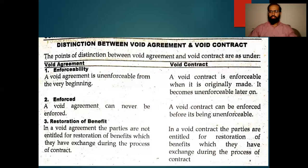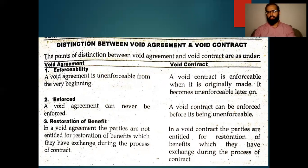In a void contract, the parties are entitled to restoration of the benefit which they have exchanged during the process of the contract. If a payment has been made, you will have to settle it. If you have delivered certain things and payment was to be made later, then payment must be made to that person.